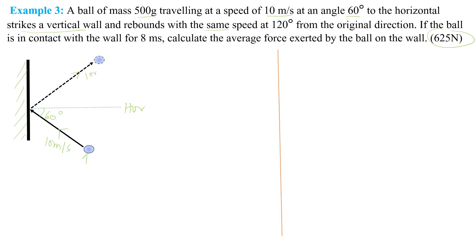The ball rebounds at the same speed of 10 meters per second to position two at an angle of 120 degrees from the original direction. This statement means that from position one to position two, the change in direction is 120 degrees. So already we have 60 degrees here, such that the angle between the original direction and the final direction is 120 degrees.